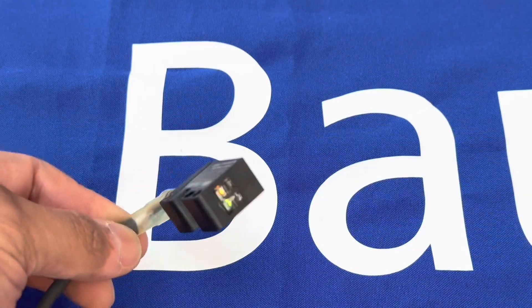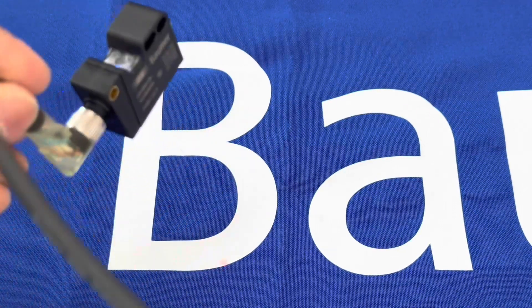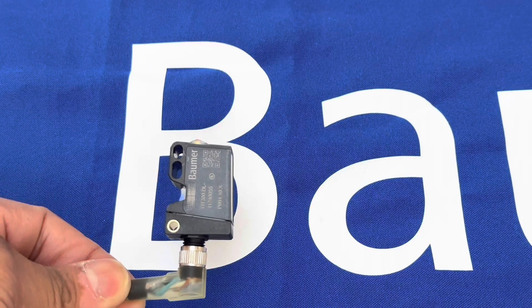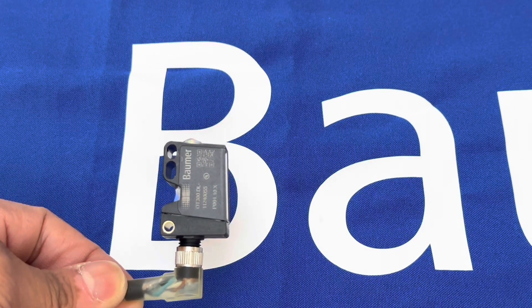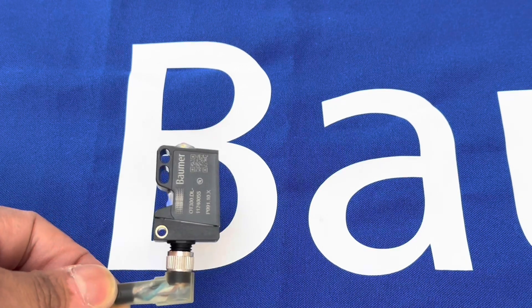So just to summarize, the OT300DL is a great sensor for simple gauging-type applications, hopper levels, detecting distance of parts away from a robot, or things like that, with a simple analog output.